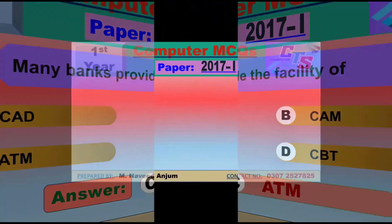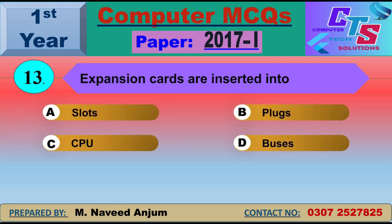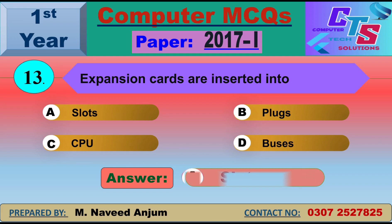Question number 13: Expansion cards are inserted into what? This MCQ has been asked in past papers twice. Expansion cards are inserted into slots on the motherboard — small narrow slots where we install cards like graphic cards, sound cards, and video cards. These expand the computer's processing capabilities. Option A — slots — will be the right answer.